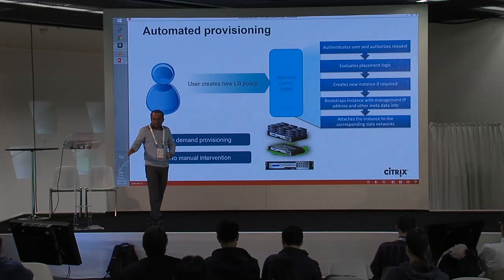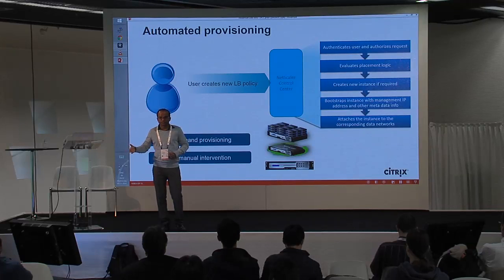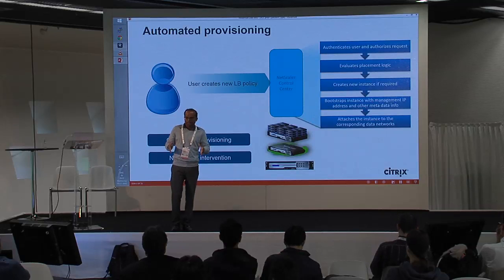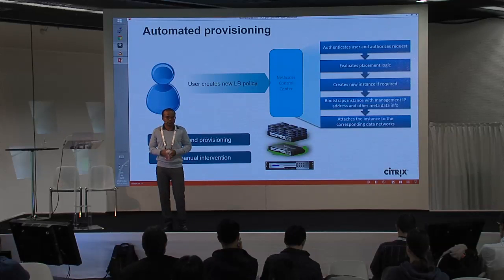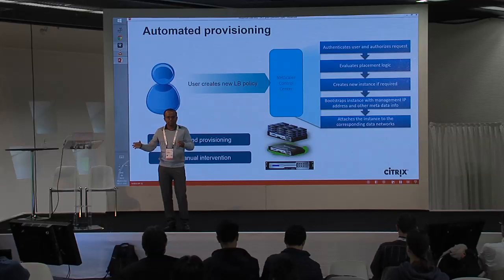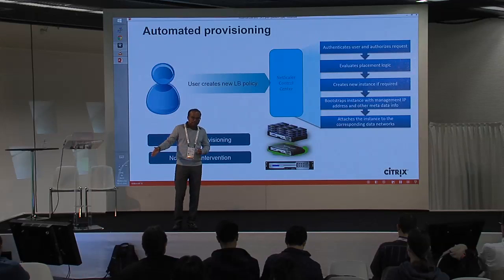More importantly, this level of automation is not restricted just to our virtual appliances. There's a VM that needs to be launched as a Nova instance and Control Center can launch that VM — that is one way to think about offering load balancing as a service. But we don't want to restrict our customers' choice around appliance types. You choose an appliance type based on the performance and scale that you need. As far as automation is concerned, we provide the same level of automation irrespective of the appliance type, whether it's an SDX appliance or an MPX appliance.